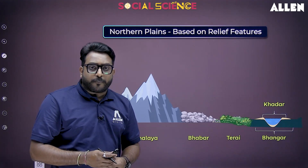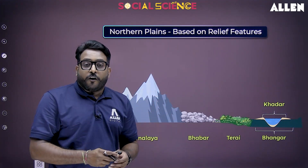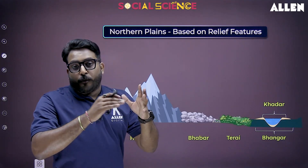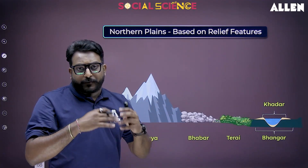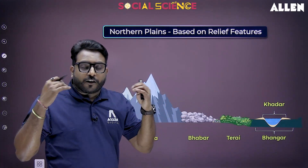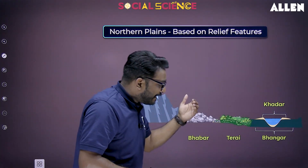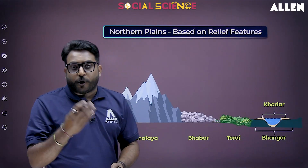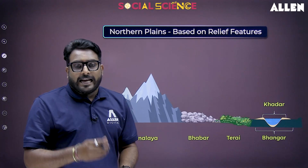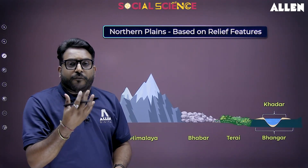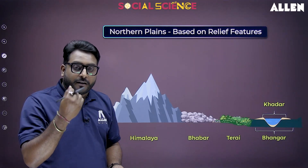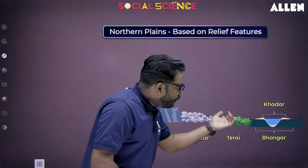Most of the Northern Plains are made up of older alluvium, which creates a terrace-like feature in the flood plains. The soil of this Bhangar region, or older alluvium, has characteristics of calcareous deposits known as kankar. The newer alluvium part is known as the Khadar.